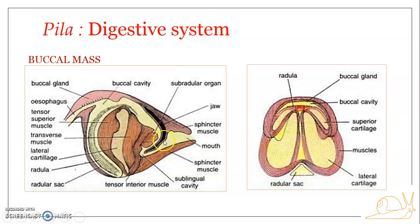These jaws are cuticular in nature and are placed along the posterior part of the vestibule. They are connected by a thin cuticular membrane. The anterior cutting edge of each jaw is serrated, like a saw, and bears numerous small tooth-like processes on the anterior side. The wall of the vestibule is provided with muscle fibers forming sphincter muscles.